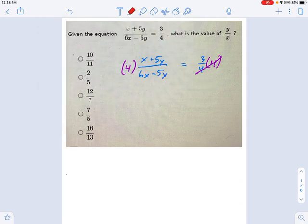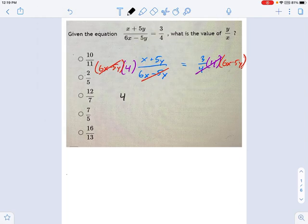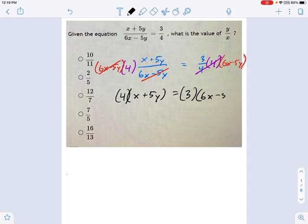And then to multiply away the 6x minus 5y, I'm going to multiply each side of the equation by 6x minus 5y. 6x minus 5y on both sides. And on the left side, that cancels out nicely. So what do we have left once all the crossing out is done? We have 4 times (x + 5y) equals 3 times (6x - 5y).